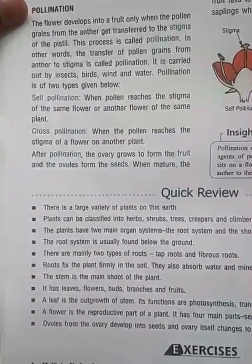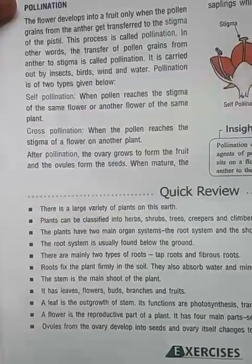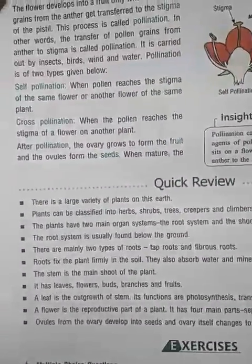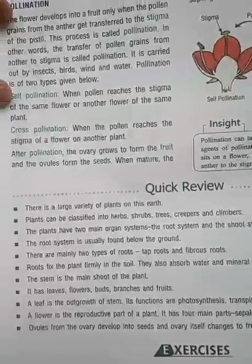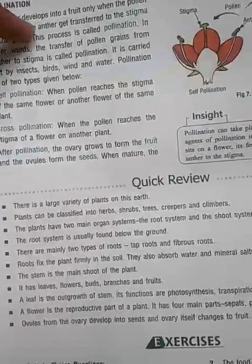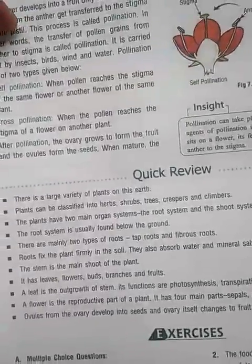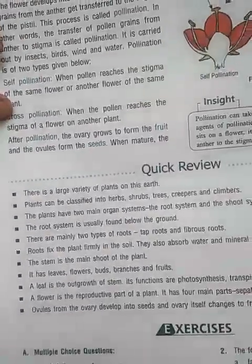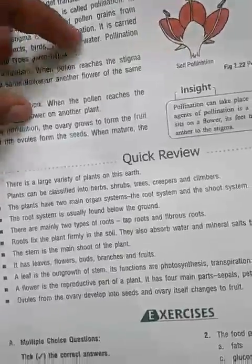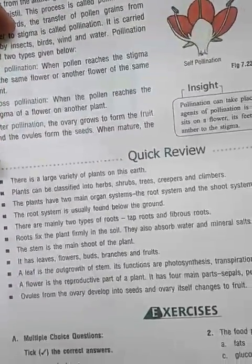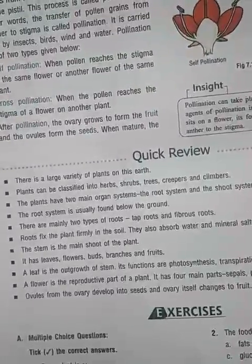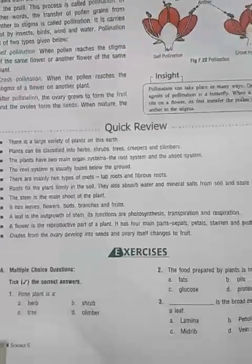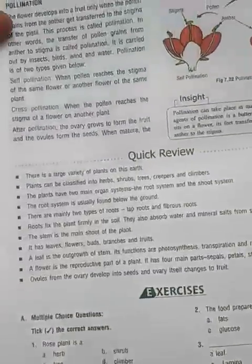The flower develops into a fruit. When the pollen grains are transferred from the anther to the stigma of the pistil, this process is called pollination. The transfer of pollen grains from the anther to the stigma is called pollination. It is carried out by insects, birds, wind, and water.